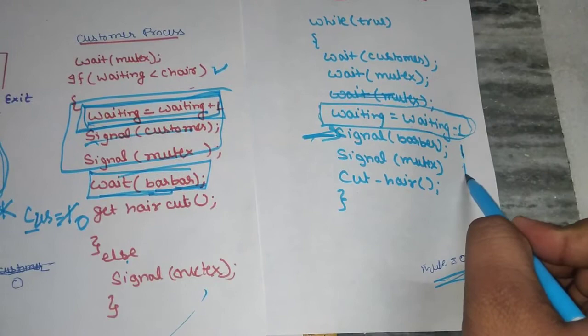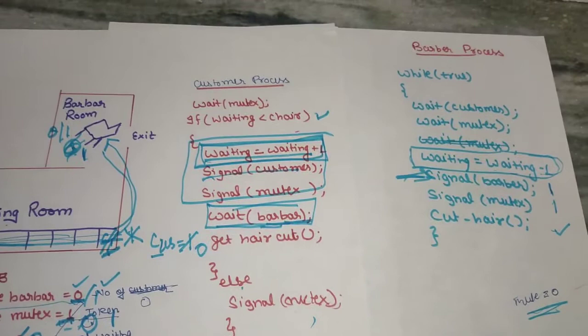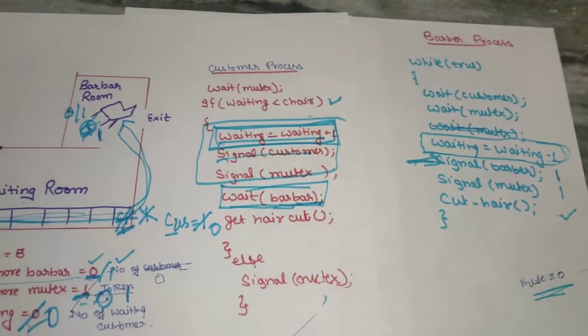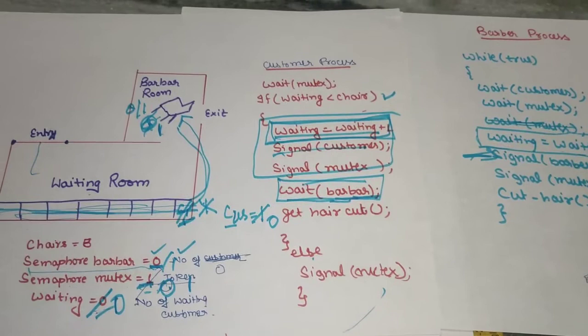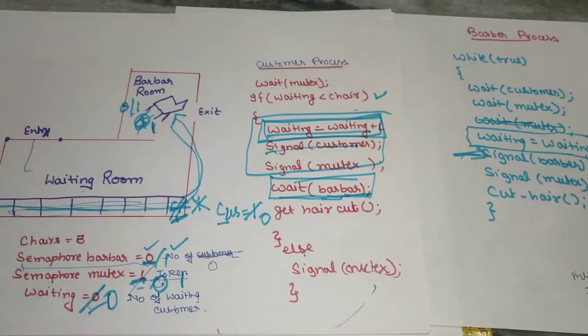This is the complete solution using semaphores for the sleeping barber problem. This is an important concurrency problem, the fourth one. In previous videos I covered producer-consumer, dining philosopher, and reader-writer. Thank you, hopefully you understand. If there are any doubts, message me and I will resolve them. Have a nice day.